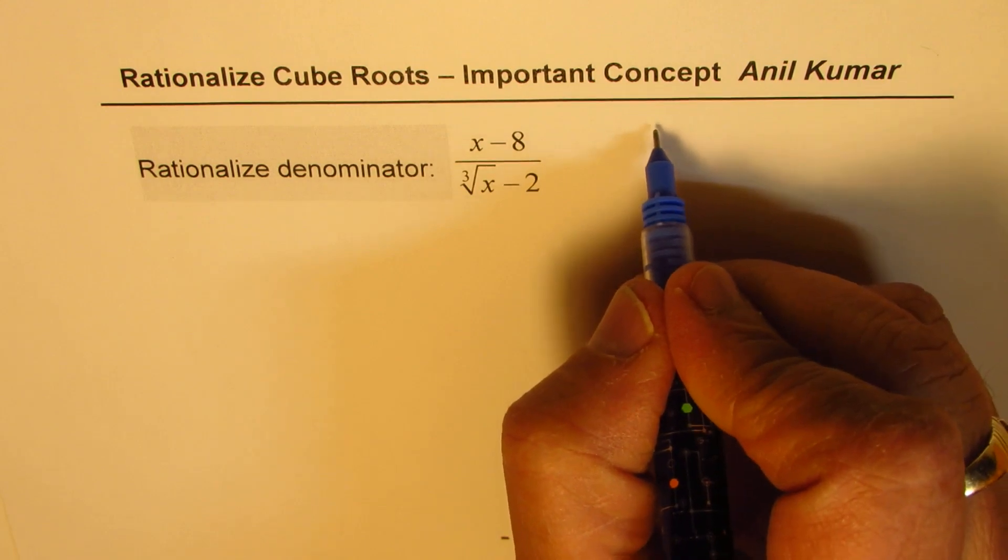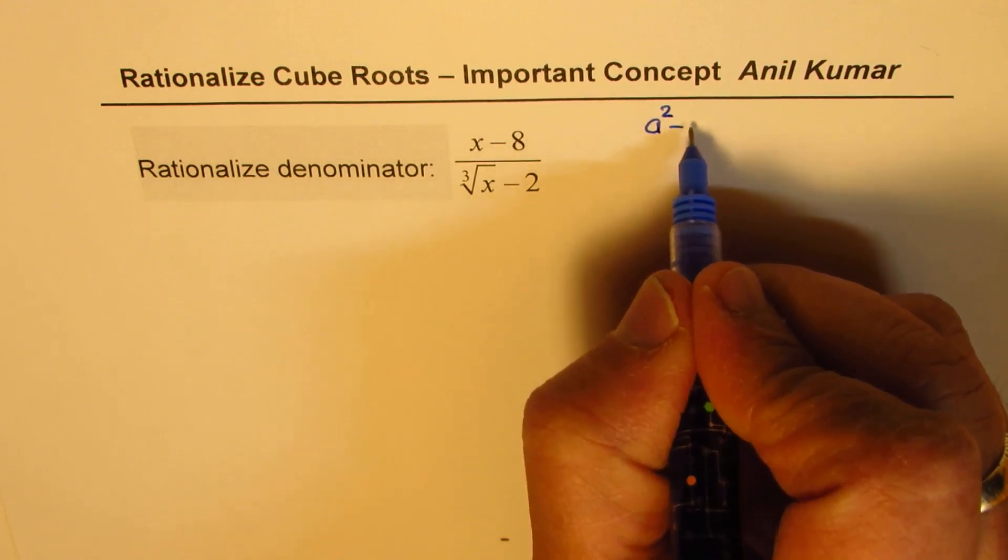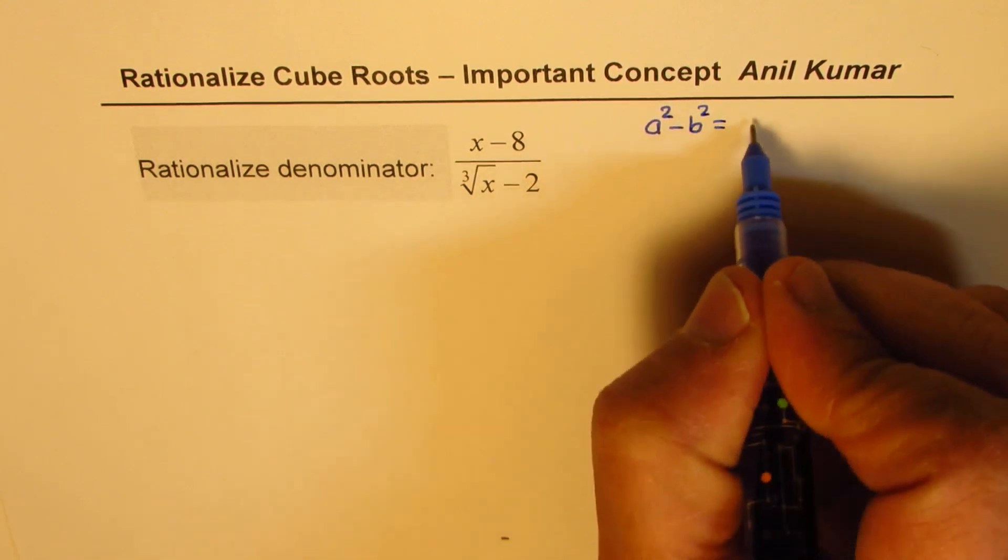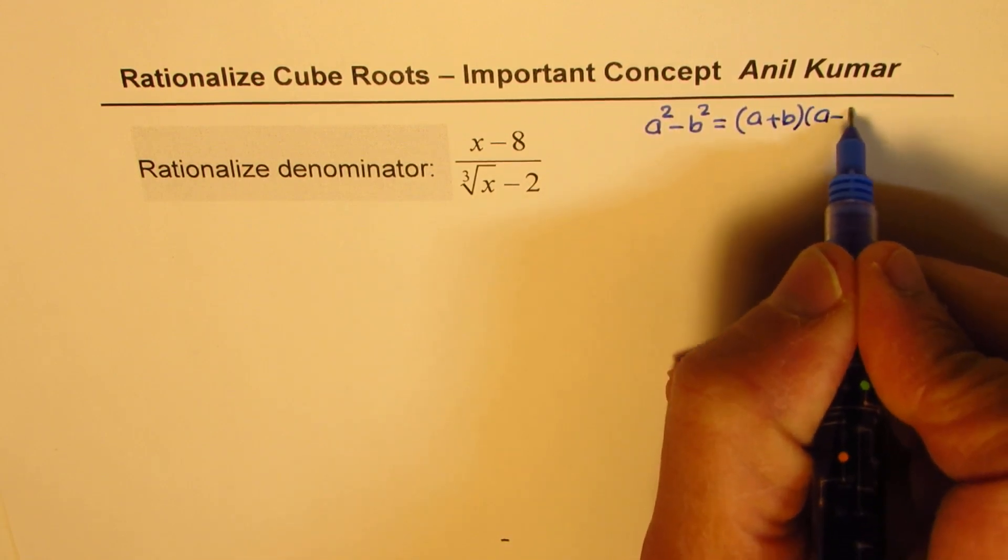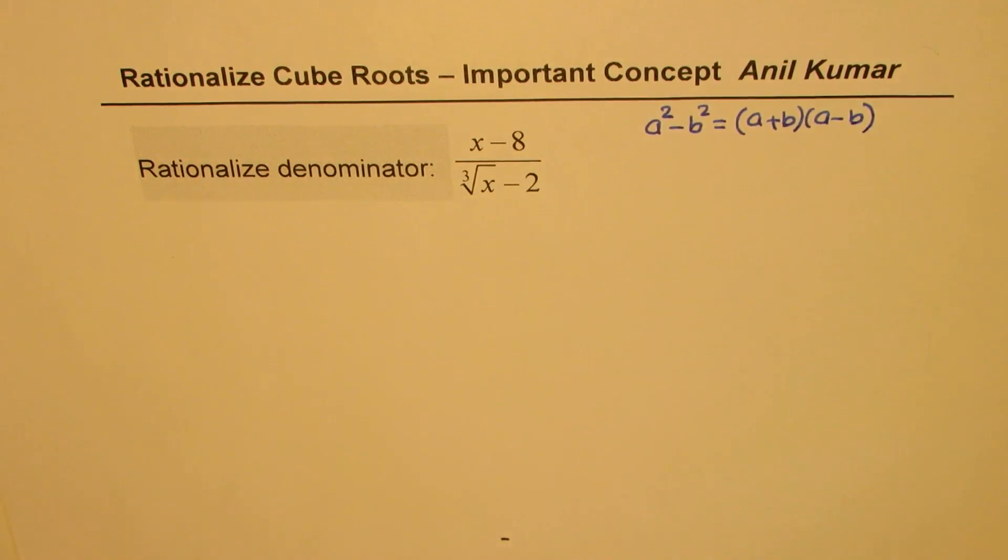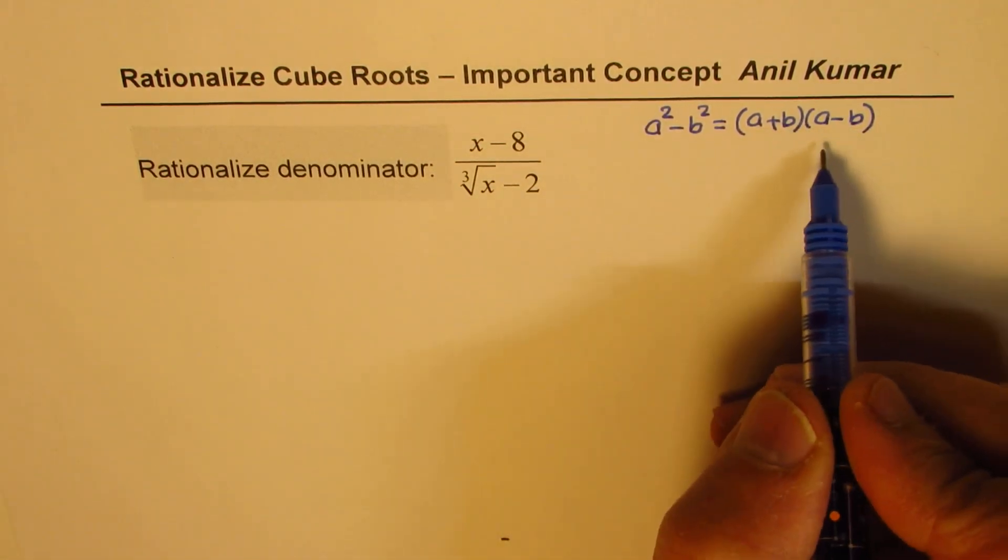We basically use the concept of a square minus b square equals to product of a plus b and a minus b. So, that is the conjugates, right?